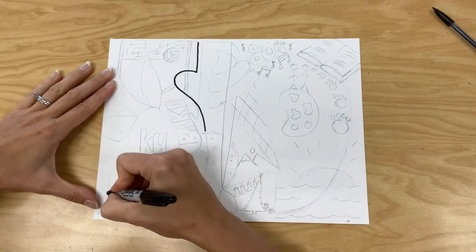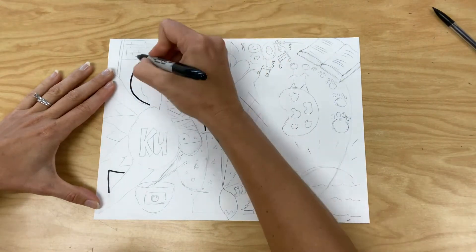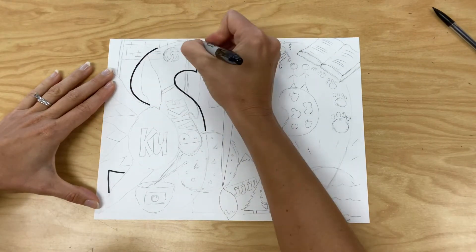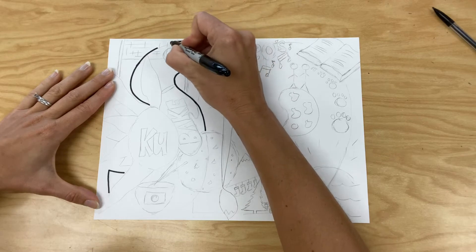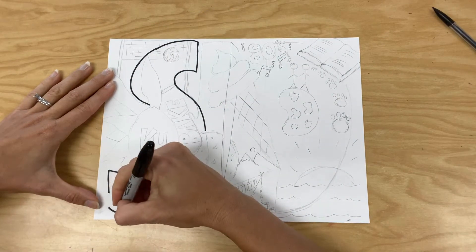Once you have completed the sketch, you are going to take a black Sharpie marker. If you do not have a black Sharpie marker, regular black marker will do. And you are going to outline your pencil line of your initials first.